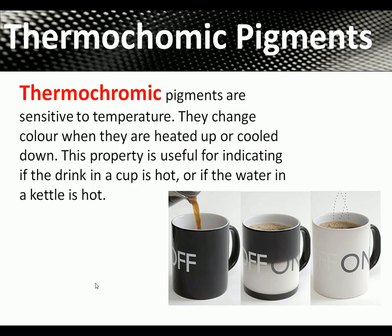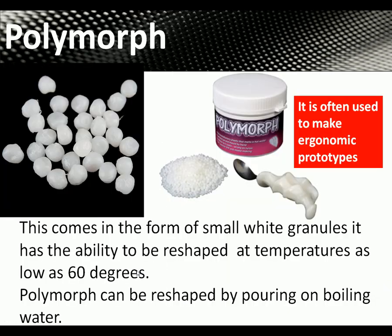Thermochromic pigments are useful for indicating if a drink is hot. On a coffee cup, the ceramic and pigment start black, then change to white as they heat up. They're also used for things like baby spoons that indicate if food is too hot. Next, polymorph comes in the form of small white granules.